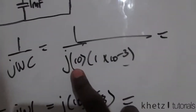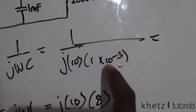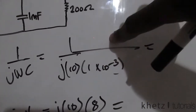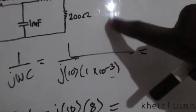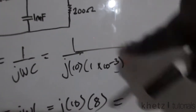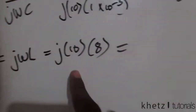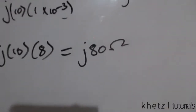Punching these into the calculator: 10 multiplied gives 10 to the power negative 2, and taking 1 over j gives us a negative j term, so the result for Zc is negative j100 ohms. For the inductor, 10 multiplied by 8 is 80, so ZL is j80 ohms.